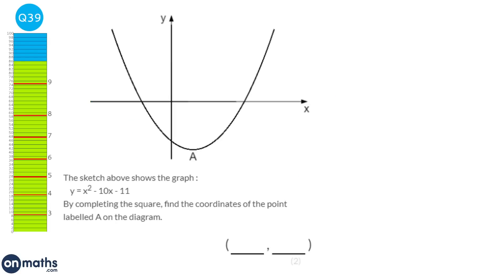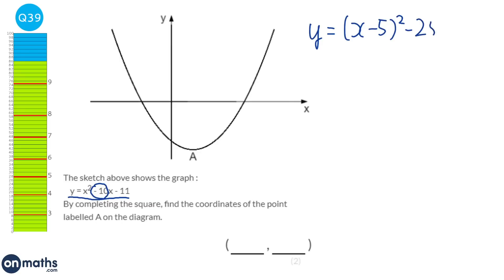Completing the square on x² minus 10x minus 11: write (x minus 5)², which expands to x² minus 10x plus 25. Remove the 25 and include the minus 11, giving (x minus 5)² minus 36. So the minimum point of the graph shifts right 5 and down 36.